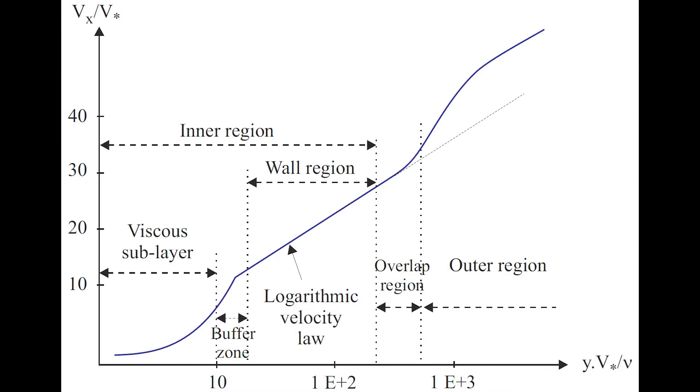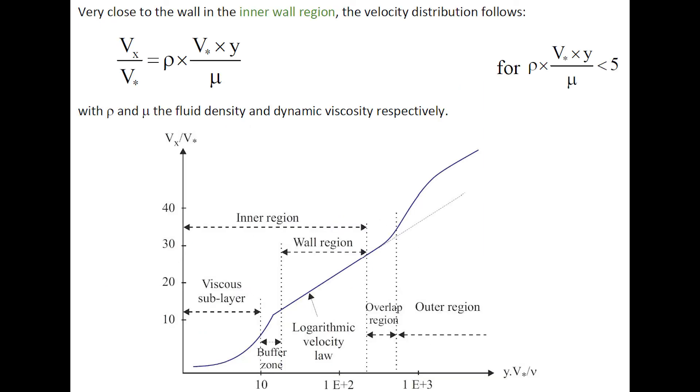Let's look more closely at the inner region under the viscous sublayer and the wall region. Very close to the wall, in the inner wall region, the velocity distribution is proportional to the distance from the wall.